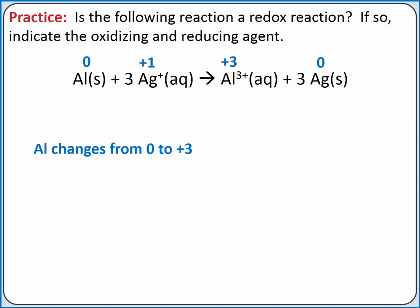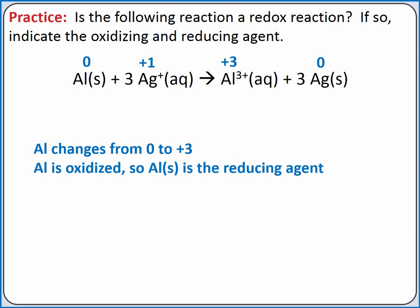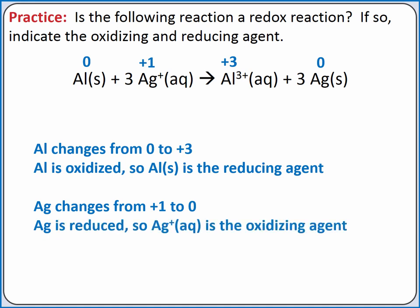Based on these oxidation states, we see that aluminum changes from zero to plus three. This means aluminum is oxidized because its oxidation state increased. It also means that solid aluminum is the reducing agent. By undergoing oxidation, which is the loss of electrons, it forces something else to undergo reduction, which is gaining electrons. We also see that silver changes from plus one to zero. This means silver is reduced, because the oxidation state decreases. It also means that the silver ions in aqueous solution are the oxidizing agent. By undergoing reduction, silver forced aluminum to be oxidized.